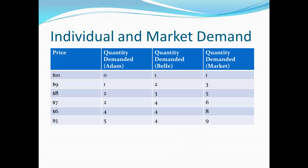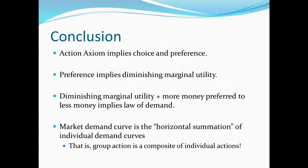The quantity demanded on the market is really just what we call the horizontal summation of the individual demand curves. The reason we call it that is because on a demand curve, we have price on the vertical axis and quantity on the horizontal axis. Since what we're doing is adding up the quantities demanded by various people, we're adding along the horizontal axis. Wrapping things up: from this video we should get a few key points. First, the action axiom implies choice and preference. Second, preference implies diminishing marginal utility. If we take diminishing marginal utility and combine it with the fact that more money is preferred to less money, we end up with the law of demand. And the market demand curve is really just the horizontal summation of individual demand curves — group action is really just a composite of individual actions.